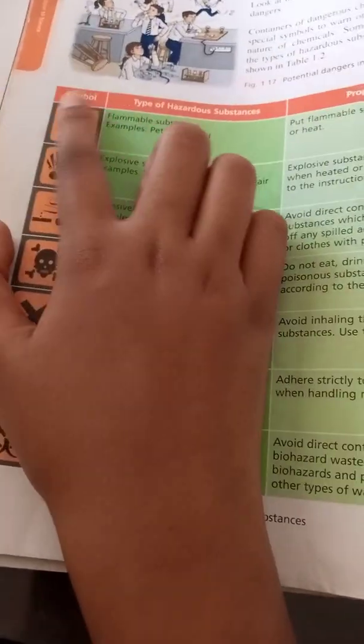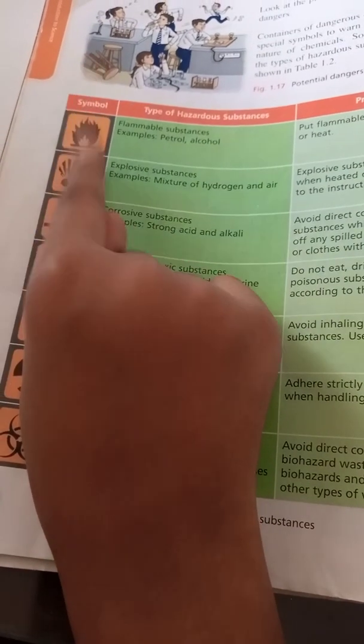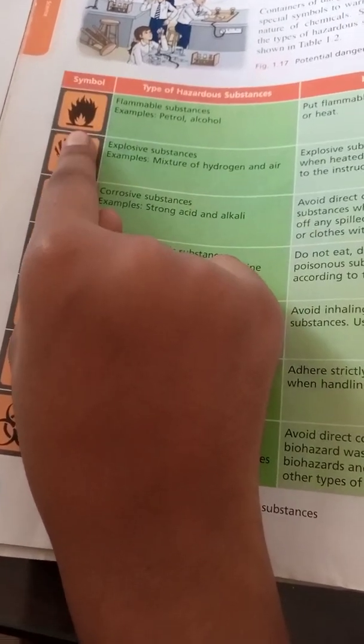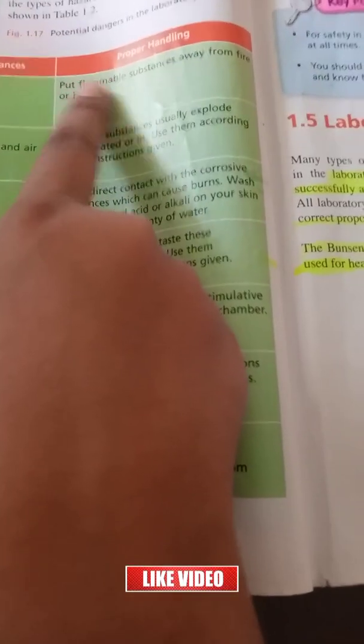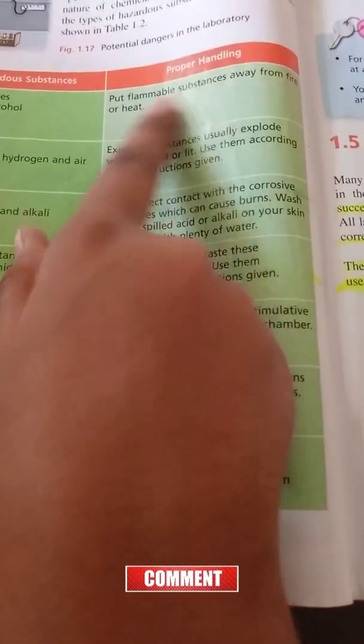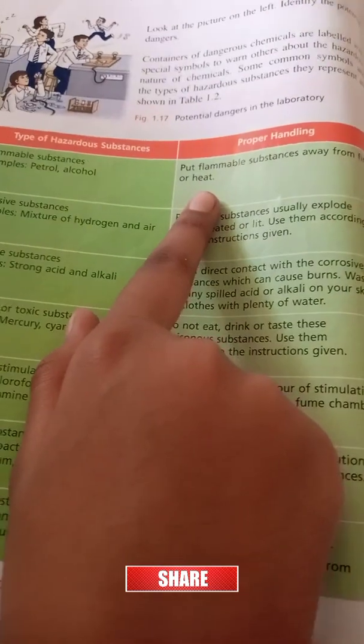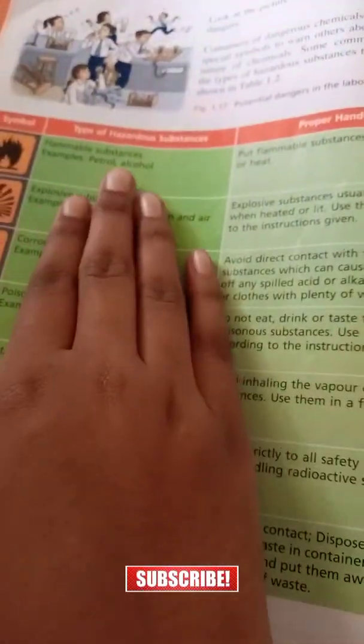This one is about flammable substances and the examples are petrol and alcohol. They are saying to keep flammable substances away from fire or heat. This is correct because there is alcohol in perfumes, so if you put a perfume near fire, the fire will spread in the house.